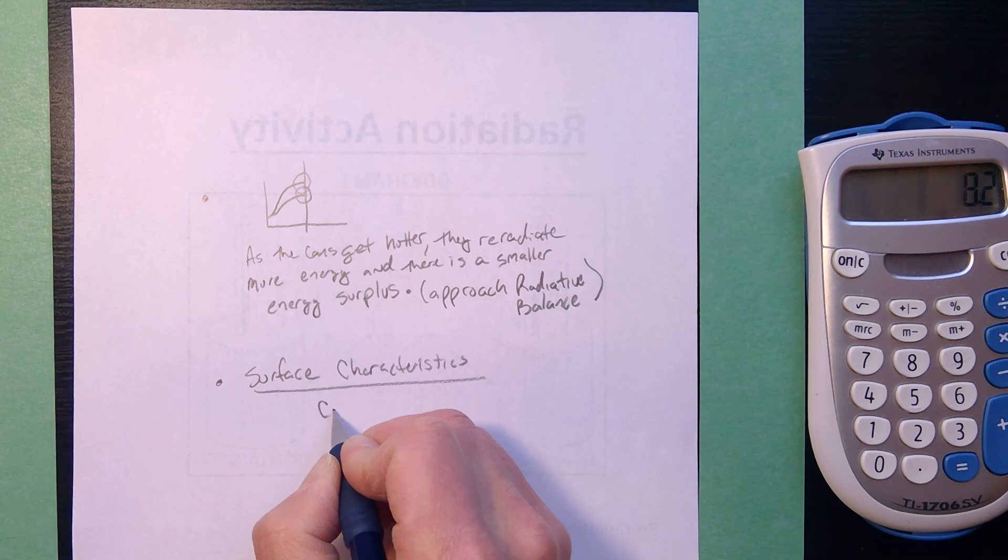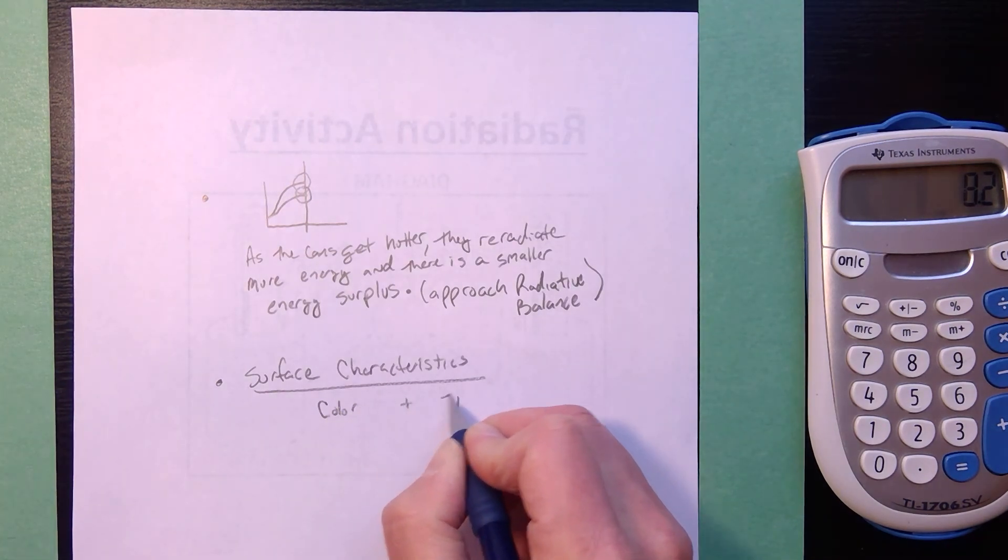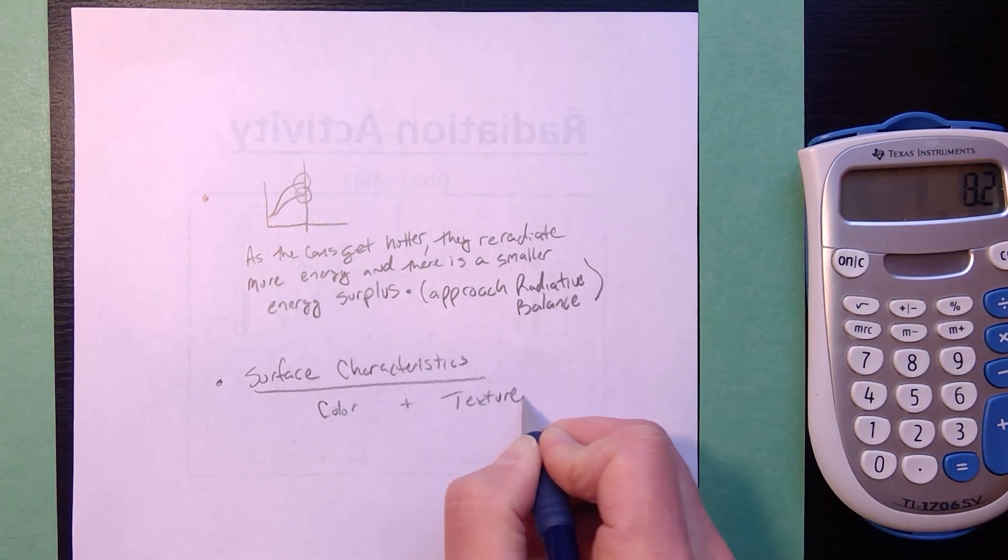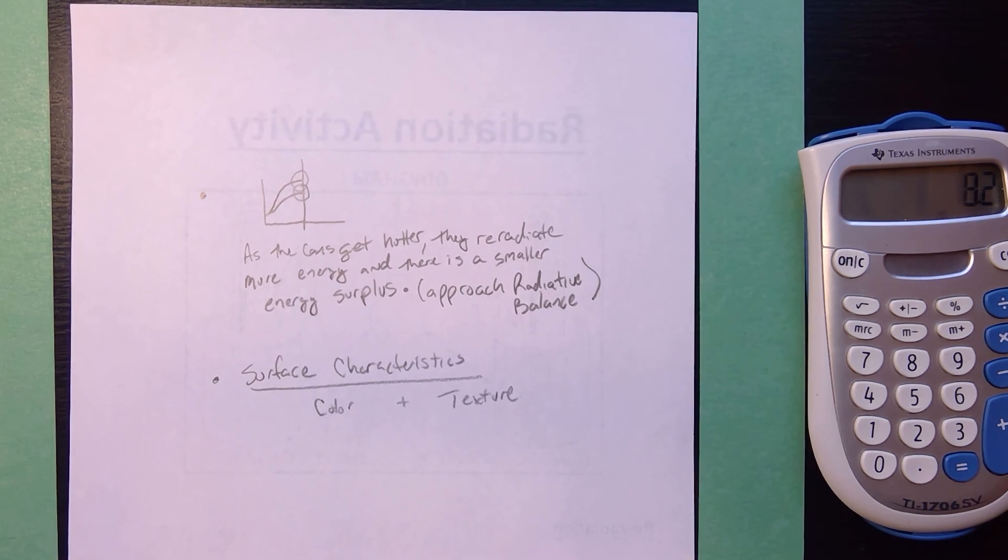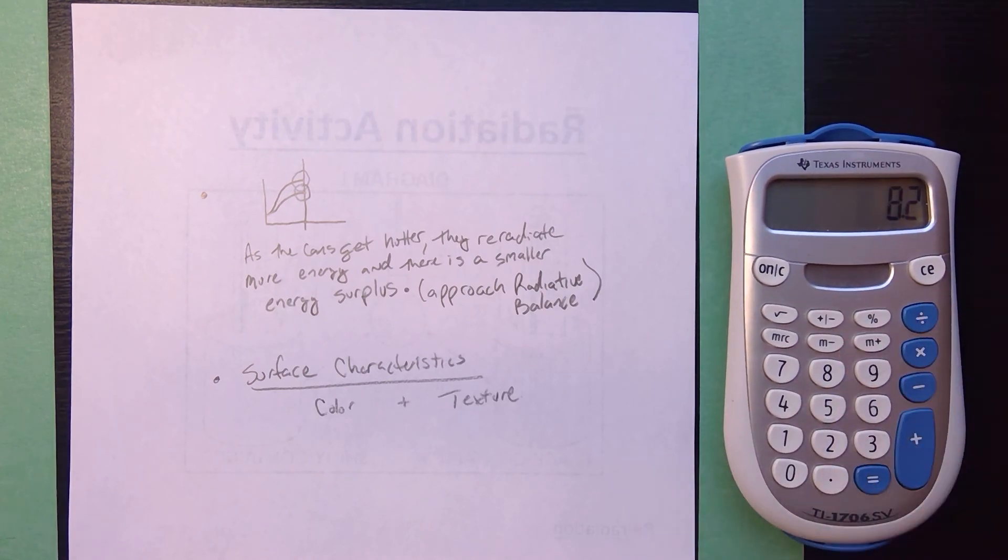Characteristics make sure when you're talking about the surface for surface characteristics you want to identify both the color and the texture. If it's dark in color and rough in texture they tend to be good absorbers and good radiators. If they're lighter in color and smoother in texture then they are better at reflecting and they actually absorb less heat energy. So hopefully you got the concepts of absorbers radiators energy surplus energy deficit radiative balance I hope this helps take care.